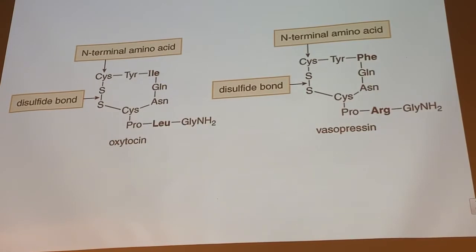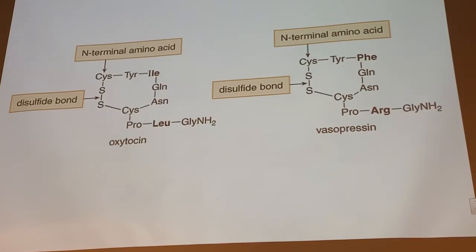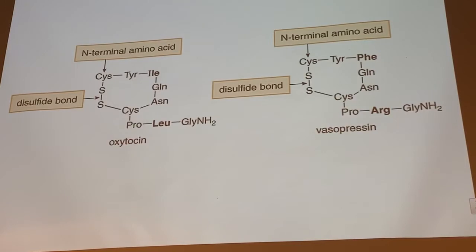Another interesting feature about these peptides: you'll see NH2 written at the C-terminus. Glycine is the C-terminal amino acid — there's no amino acid listed to the right of it — but we have this NH2 here. What this means is that rather than having a free carboxylic acid at the C-terminus, it has a primary amide. So we have NH2 bonded to the carbonyl of glycine — an amide at the end of the chain. These two hormones both cause muscles to contract.